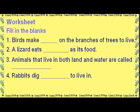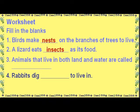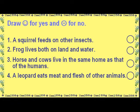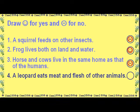Worksheet — Fill in the blanks: Birds make nests on the branches of trees to live. A lizard eats insects as its food. Animals that live in both land and water are called amphibians. Rabbits dig burrows to live in. Draw a smiley for yes and a sad face for no: A squirrel feeds on other insects — No. Frog lives both on land and water — Yes. Horses and cows live in the same home as humans — No. A leopard eats meat and flesh of other animals — Yes.